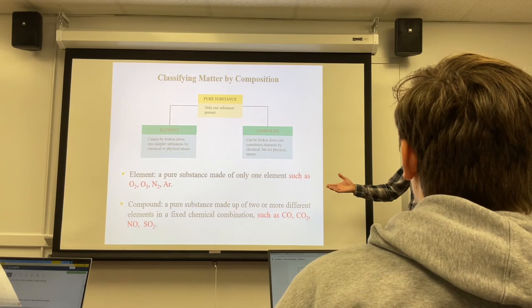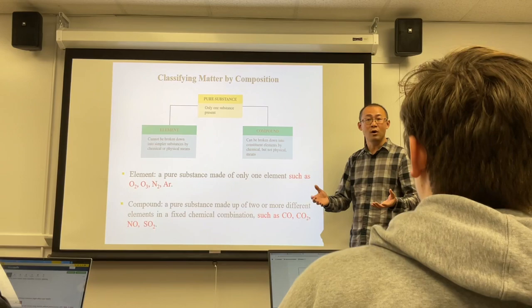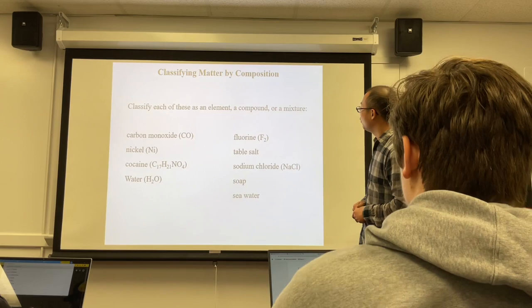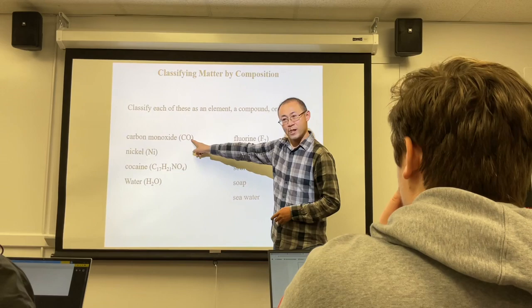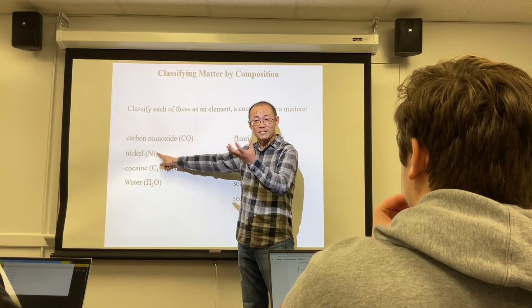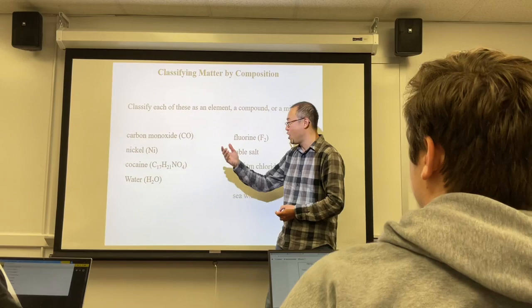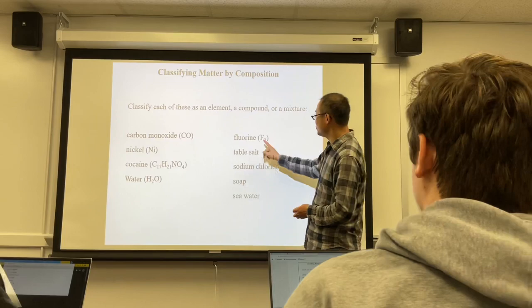These two are the classification of pure substances. I won't ask you for the definition — I'll give you something and ask you to classify it. Let's classify some examples as element, compound, or mixture. Nickel is an element. Something with four elements — carbon, hydrogen, nitrogen, and oxygen — is a compound.